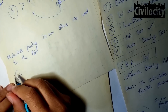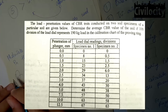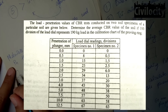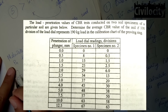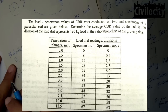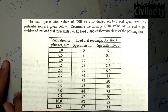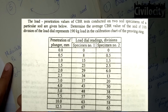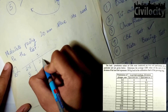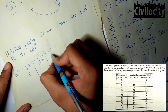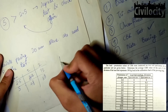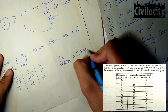Let's do a question on CBR test. The load penetration values of a CBR test conducted on two soil specimens are given. We need to determine the CBR value of the soil, given that 100 divisions of the load dial represents 190 kg on the proving ring calibration chart. The proving ring shows the load being applied on the plunger. For specimen 1, the number of divisions at 2.5 mm is 34 and for specimen 2 it is 13.